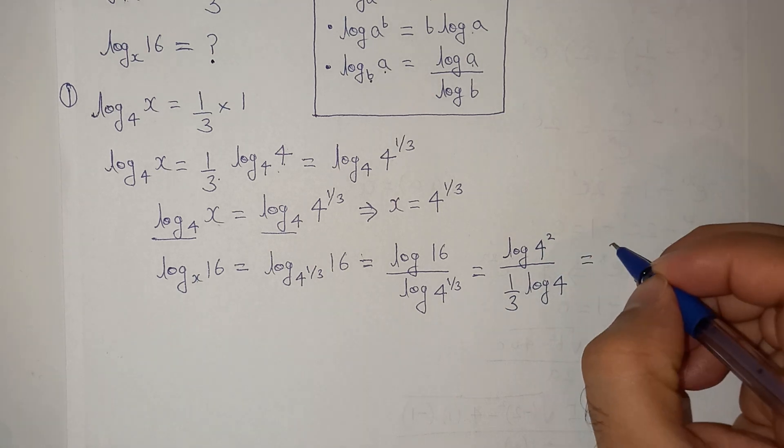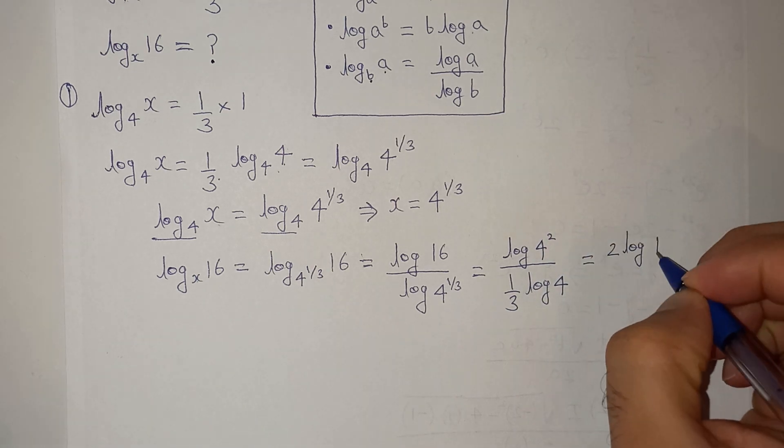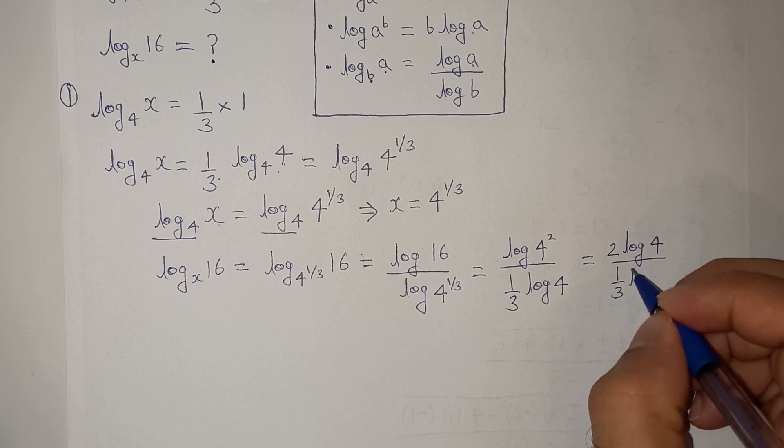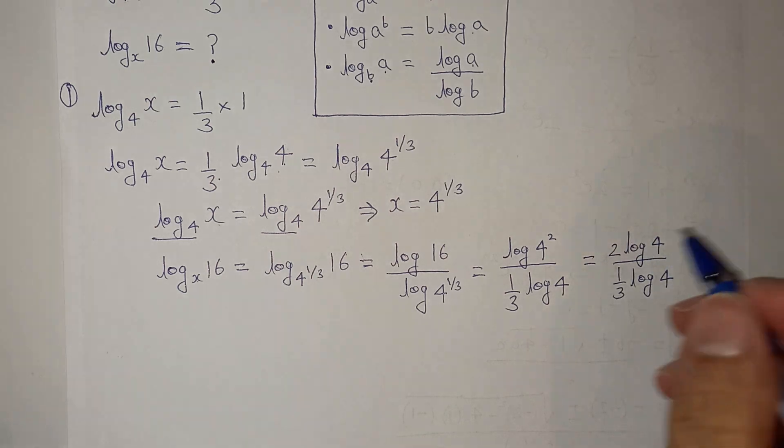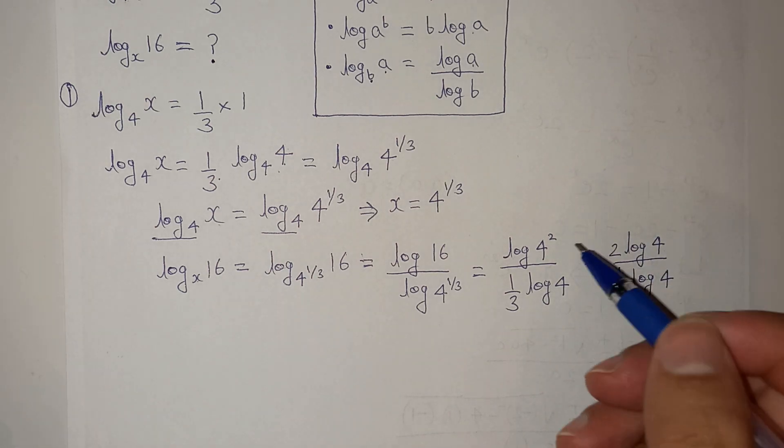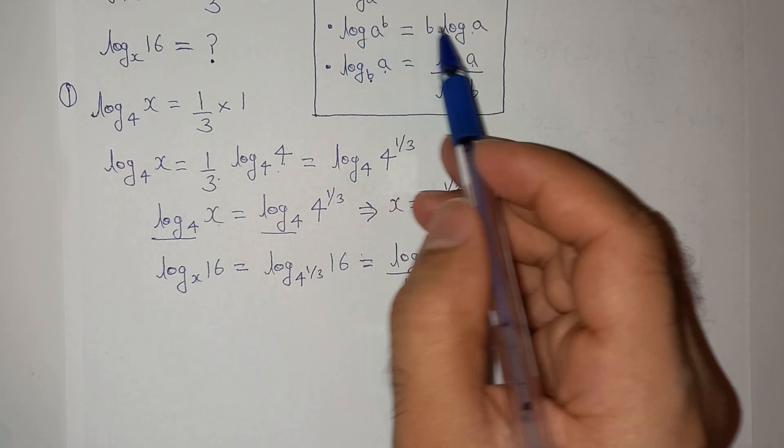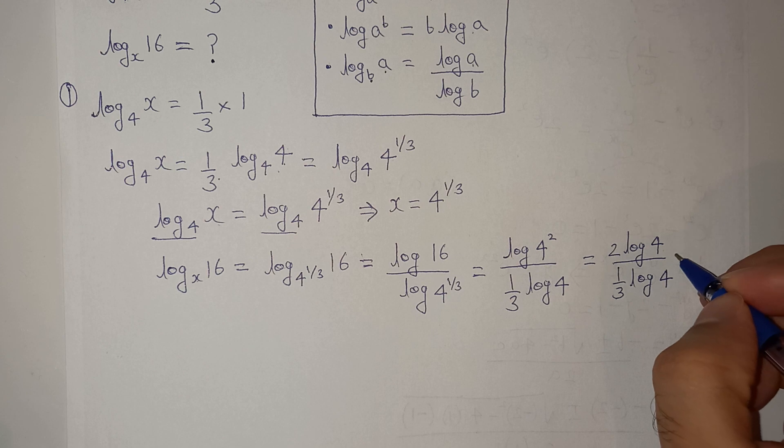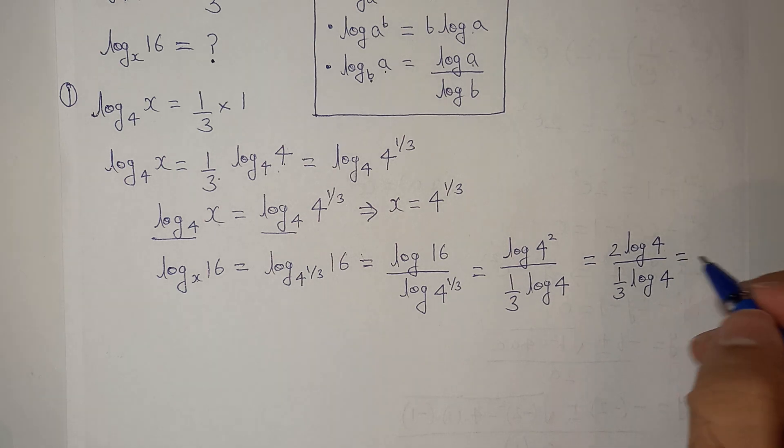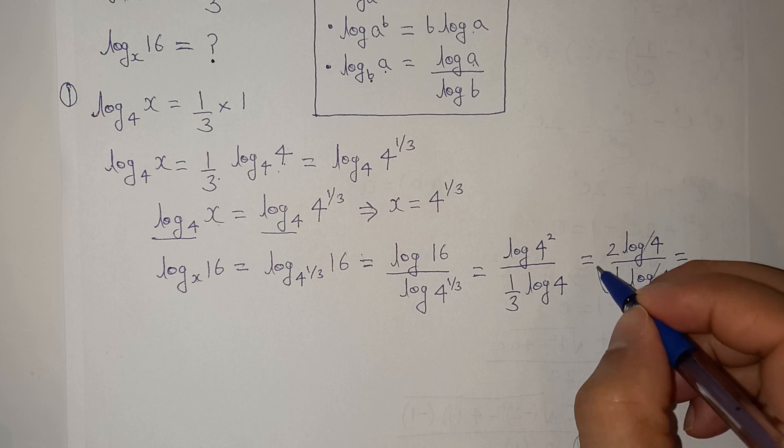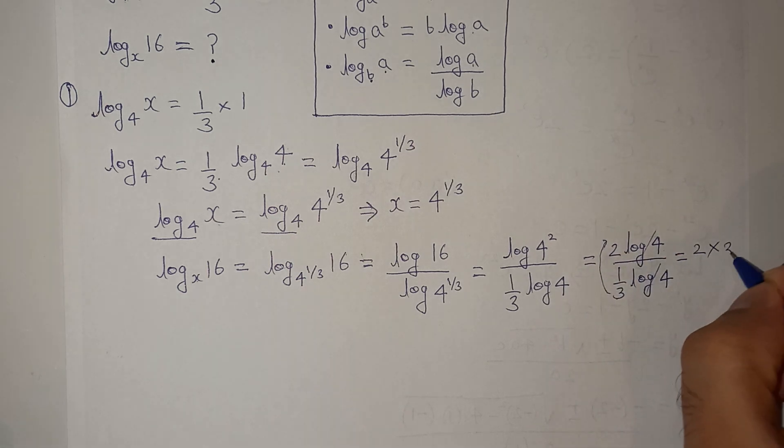Further, this will be 2·log(4) divided by 1/3·log(4). Please be careful that I am using all these rules like log(4²), which is log(a^b) = b·log(a). So log(4) and log(4) will cancel, and this 3 is going to go on the numerator, which is 2 × 3 = 6. So this is our answer.